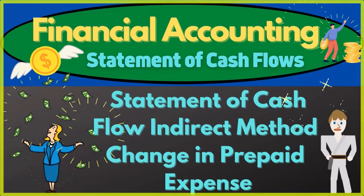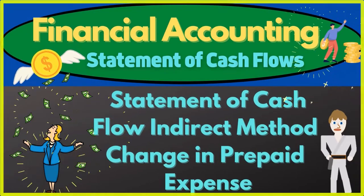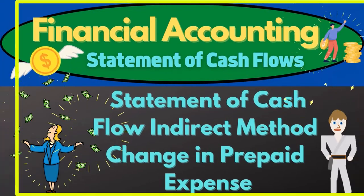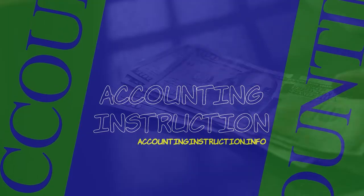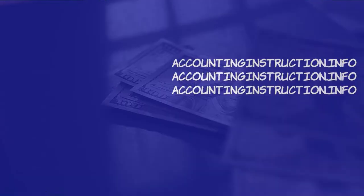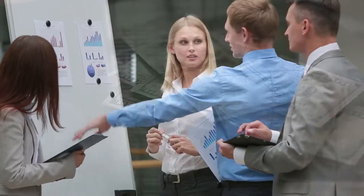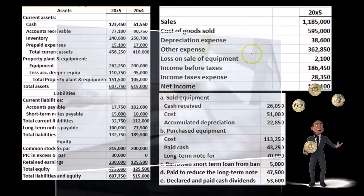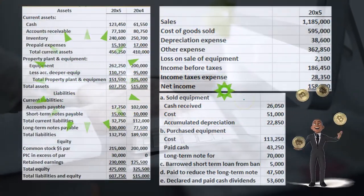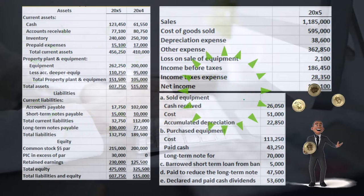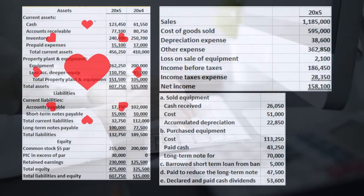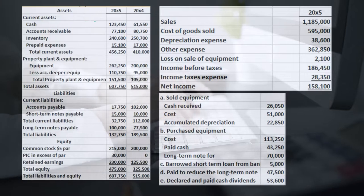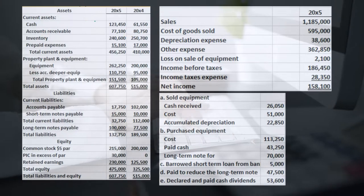In this presentation, we will continue with the statement of cash flows indirect method, looking at the change in prepaid expenses. We're going to be using this information — we've got the comparative balance sheet, the income statement, and some additional information. We will be working primarily with the difference in the comparative balance sheet with the use of a worksheet.